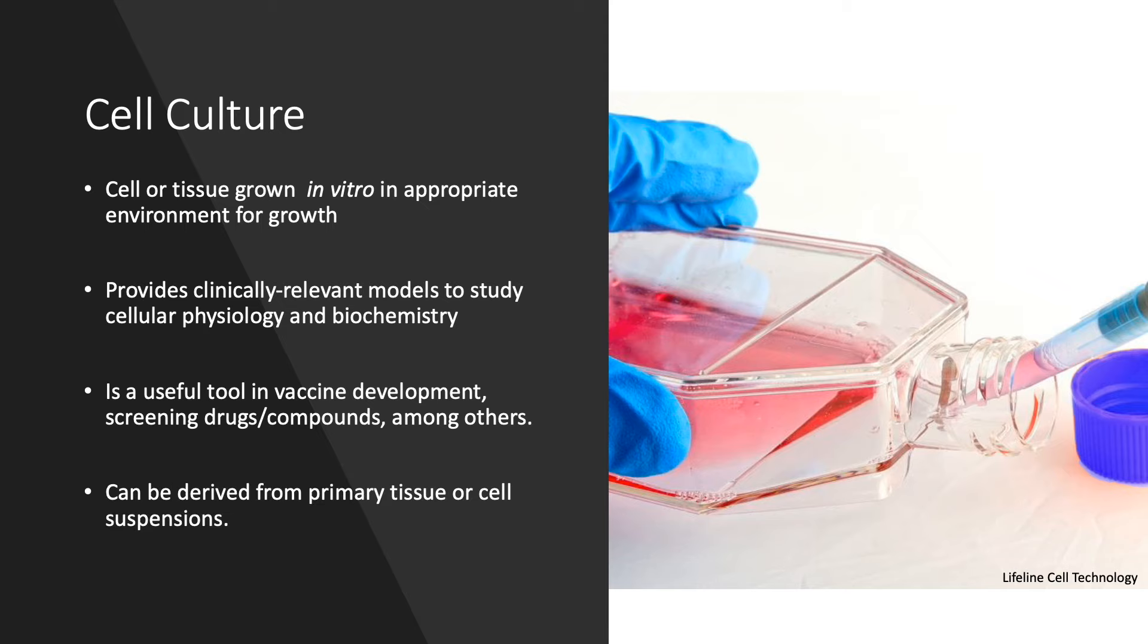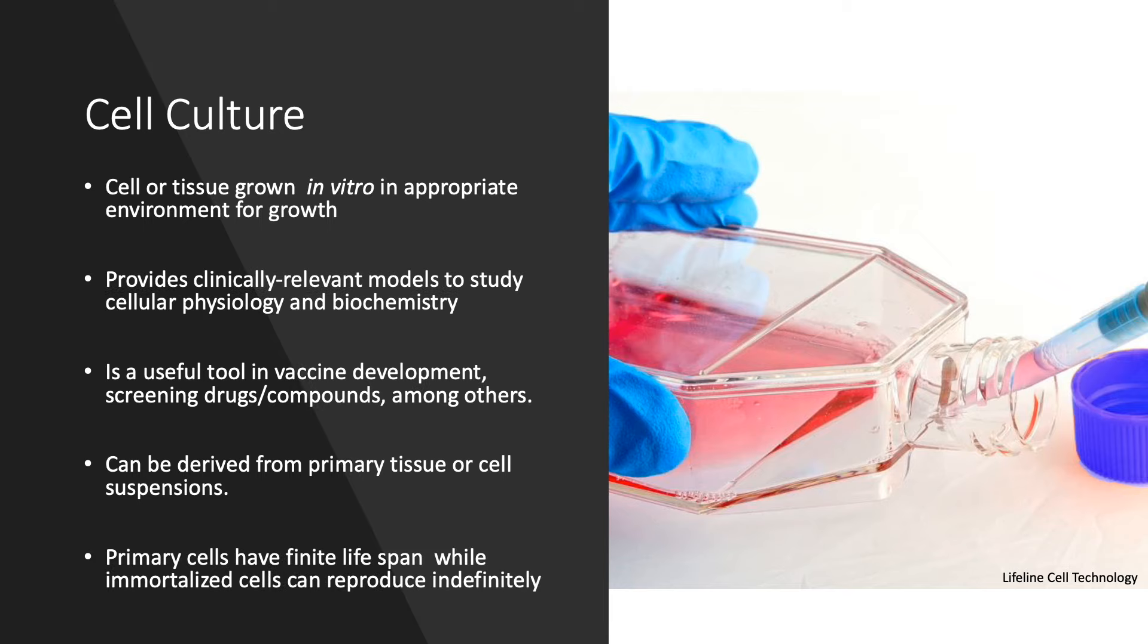Cell cultures can be derived from either primary tissue, explants, or cell suspensions. Primary cell cultures typically will have a finite lifespan in culture, whereas immortalized cell lines are, by definition, abnormal and can reproduce indefinitely. This can often be achieved by transforming cells in order to acquire these properties.